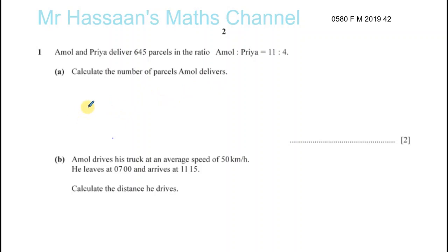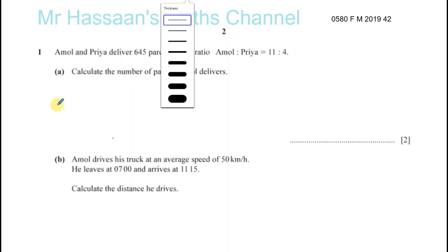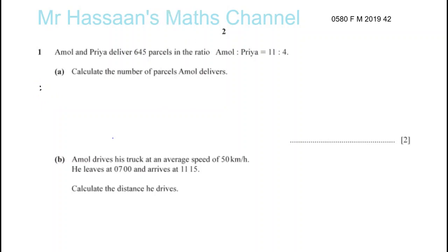We can see that 645 is the total number of parcels that both of them delivered altogether. Amol delivered more than Priya, and it's in the ratio 11 to 4. So we find the total sum of those parts: Amol has 11 parts and Priya has 4 parts, giving you 15 parts altogether.